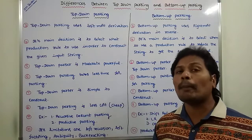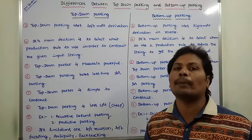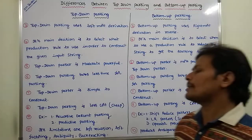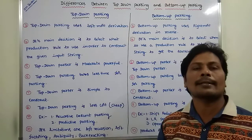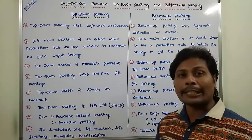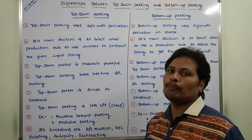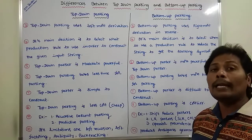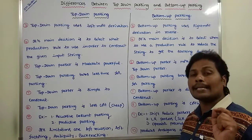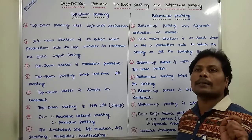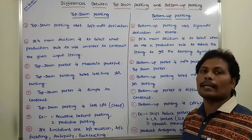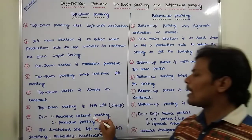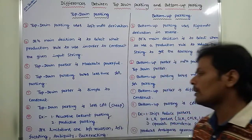Top-down parsing is cheaper, whereas bottom-up parsing is more costly. The examples for top-down parsers are recursive descent parser, predictive parsers, and LL(1) parser. The examples for bottom-up parsers are LR parsers: SLR parser, CALR parser, LALR parser, operator precedence parser, and shift-reduce parsers.